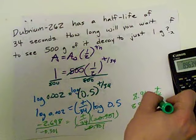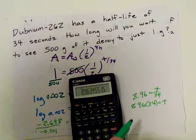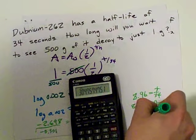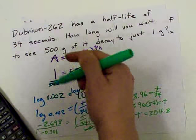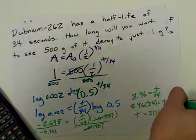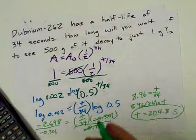Sorry guys, I'm running out of room to move my arm. That's why I'm writing like a 12-year-old here. Times 34. I get a t of 304.8. Our half-life was given to us in seconds, so our answer is 304.8 seconds. That's how long it takes for 500 grams to decay to 1 gram.